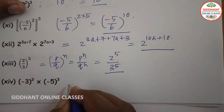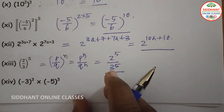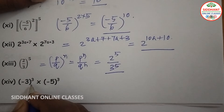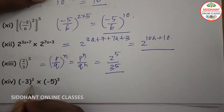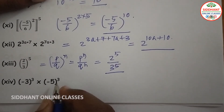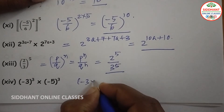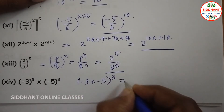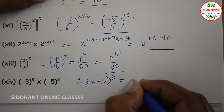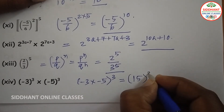Fourteenth one: (-3) to the power of 3 into (-5) to the power of 3. Bases are different but powers are same. We multiply the bases: (-3) into (-5) to the power of 3, so (-3) times (-5) equals 15, giving 15 to the power of 3.